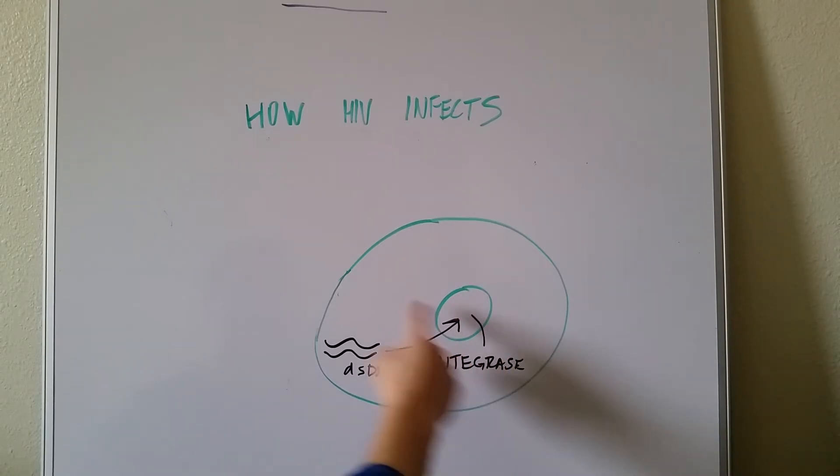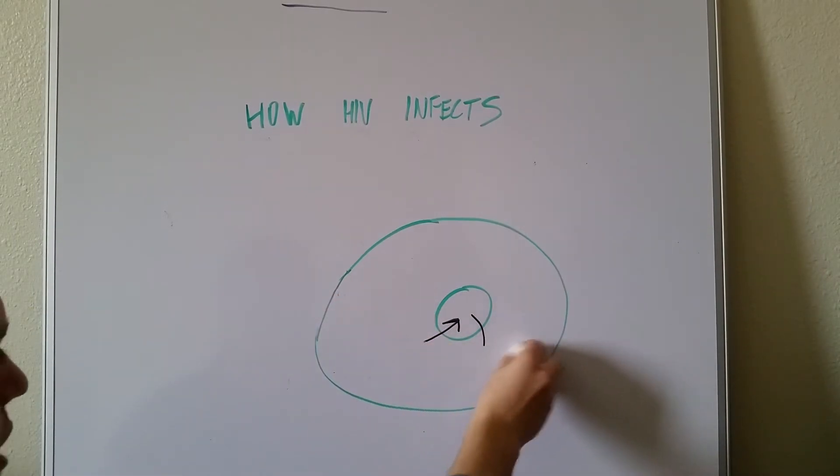The reason why I want to pull out integrase is because, just like reverse transcriptase, the other enzyme integrase, we're looking at integrase inhibitors as part of an HIV treatment regimen, right? Because if we could take out this enzyme and we could stop the viral double-stranded DNA from being integrated, well then we'd stop it from taking over cells. So that's another potential target.